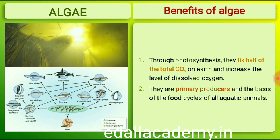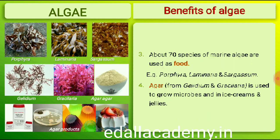Algae are useful to man in a variety of ways. At least half of the total carbon dioxide fixation on Earth is carried out by algae through photosynthesis. Being photosynthetic, they increase the level of dissolved oxygen in their immediate environment. They are of paramount importance as primary producers of energy-rich compounds which form the basis of the food cycles of all aquatic animals. Many species of Porphyra, Laminaria and Sargassum are among the 70 species of marine algae used as food.